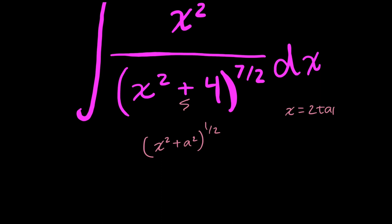So x is equal to 2 tan theta, and dx is going to be the derivative of that, so 2 secant squared theta d theta.